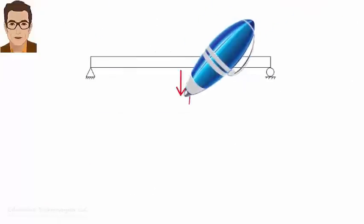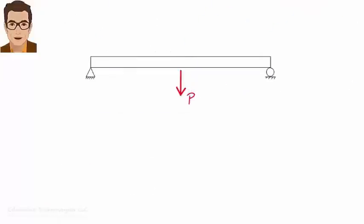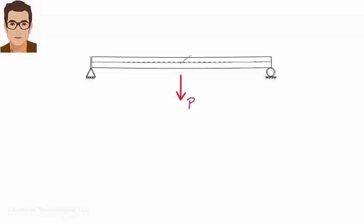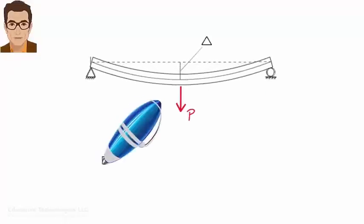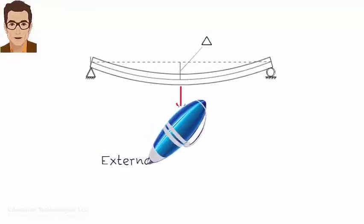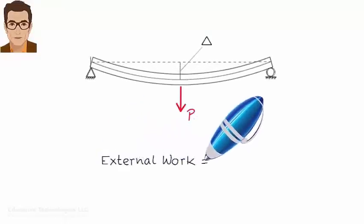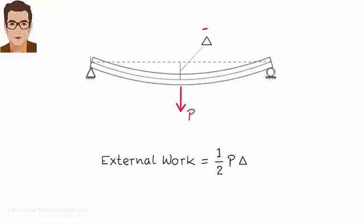In the case of a beam subjected to a concentrated load P, external work equals one-half P times delta, where delta is the vertical displacement under the load.